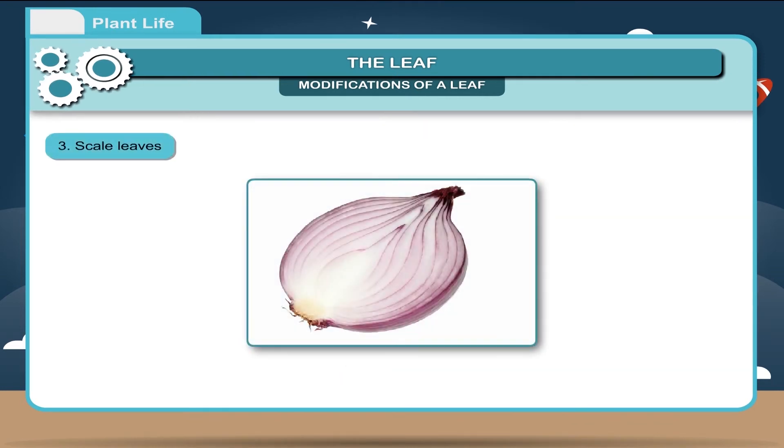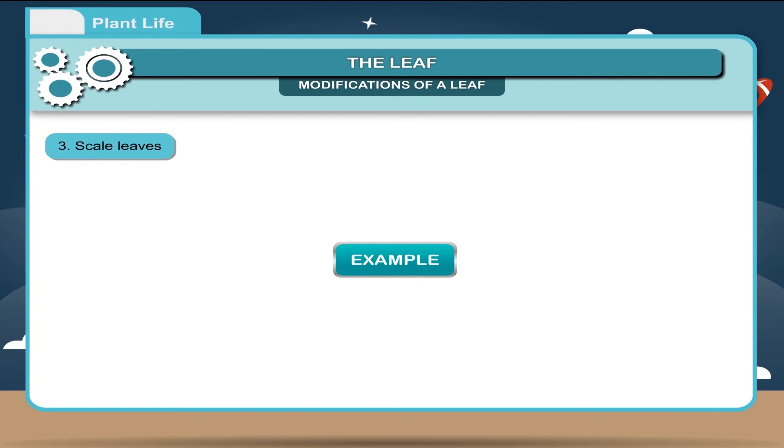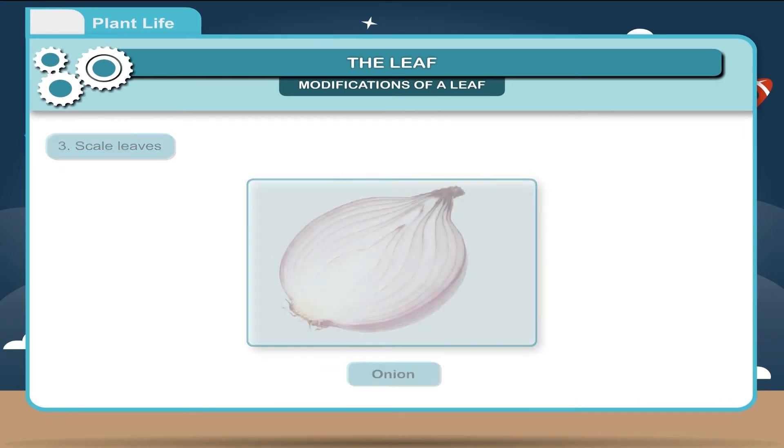Scale leaves. These leaves store food and water and become thick and fleshy. Example, onion.